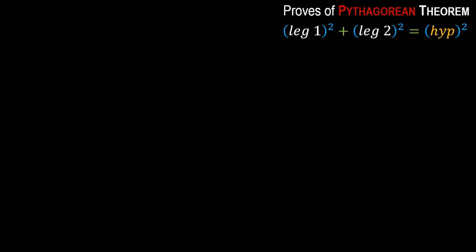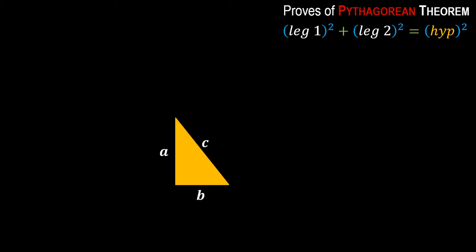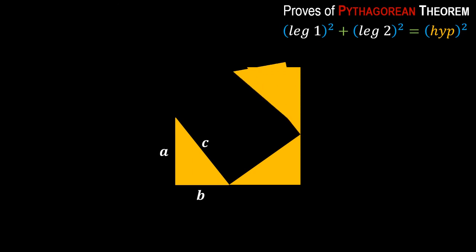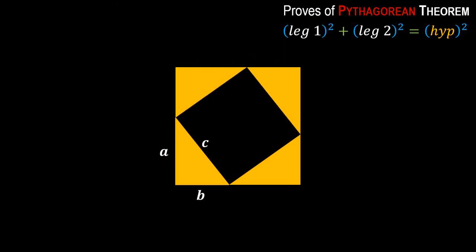For the second proof, I am using a triangle with sides labeled: the hypotenuse is c and the other two legs are a and b. I am taking four triangles of the same size and arranging them together like this — pasting them one by one to form a larger figure.